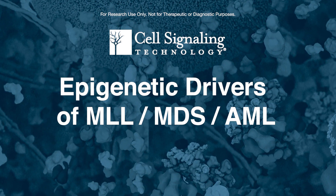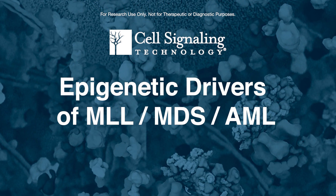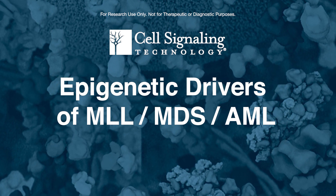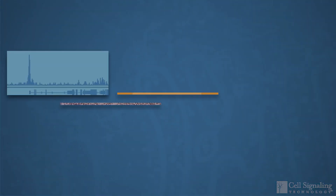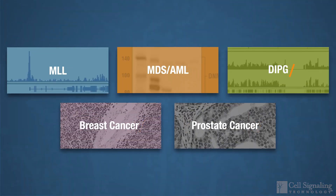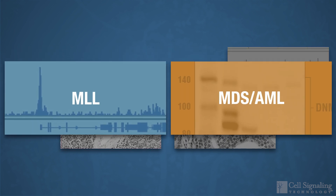Understanding the role epigenetics plays in cancer initiation and progression will be critical for future advances. Today, researchers need tools to understand how gene expression is altered in many types of cancer due to epigenetic changes. This video highlights epigenetic regulators that contribute to progression of these blood cancers.